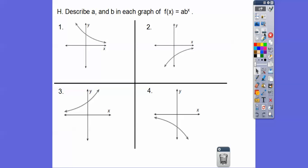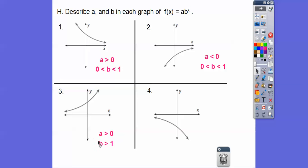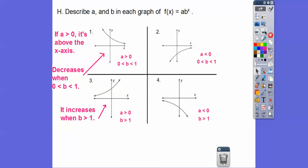Describe A and B in each graph. If A is greater than 0, the graph is above the x-axis. If B is greater than 1, the function increases. If B is between 0 and 1, the function decreases. If A is less than 0, the graph is reflected over the x-axis. So the four combinations are: A>0 with B>1 (increasing, above axis); A>0 with 0<B<1 (decreasing, above axis); A<0 with 0<B<1 (decreasing, reflected); and A<0 with B>1 (increasing, reflected).